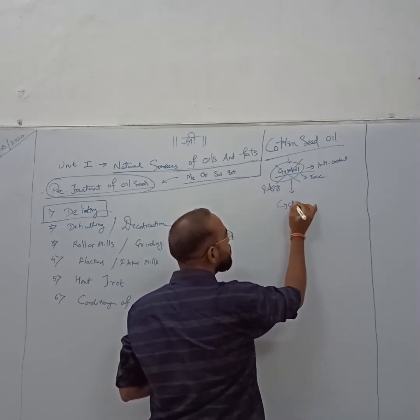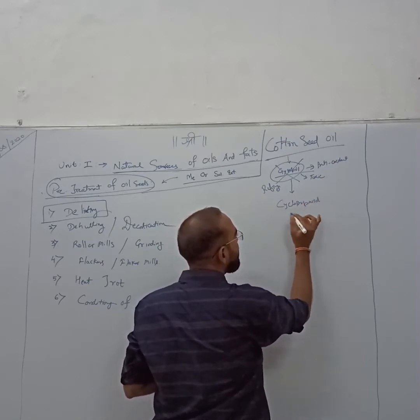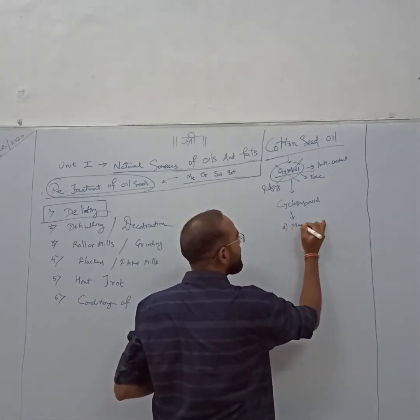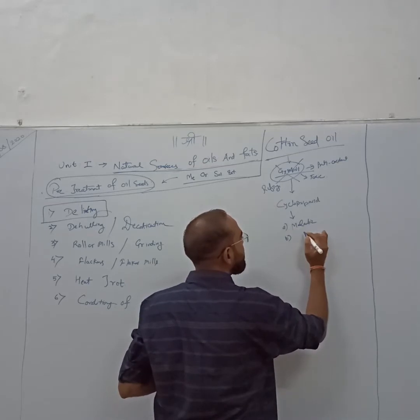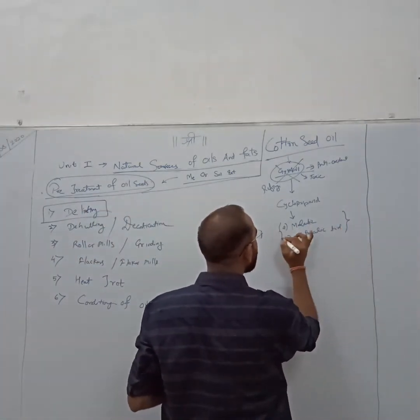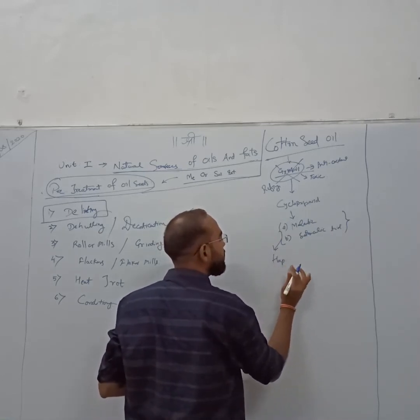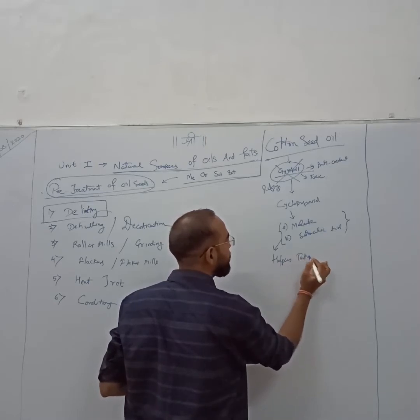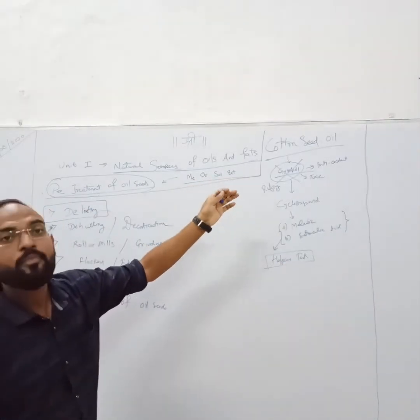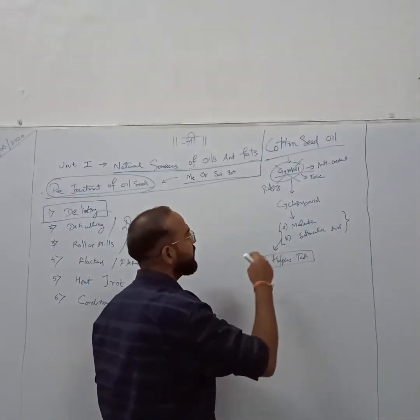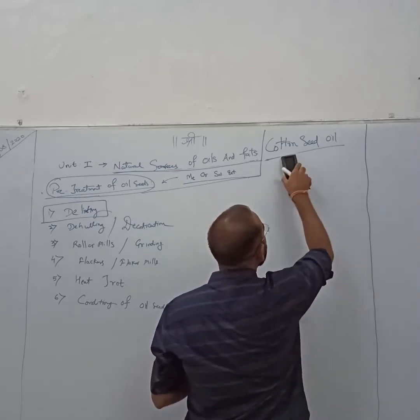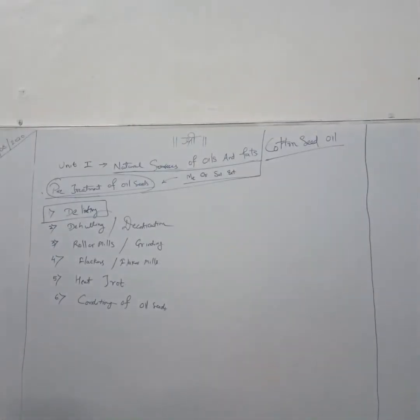It also includes one group that is cyclopropanoid. Two acids are considered as cyclopropanoid group when we talk about the cotton seed oil - that is Malvalic and Sturcuric. Malvalic acid and Sturcuric acid, these two acids are responsible for your adulteration test, that is Halphen's test. Due to this, we are able to find the adulteration by using cotton seed oil with any vanaspati or fat that should be adulterated with ghee or any other product. So this Halphen test is useful here.